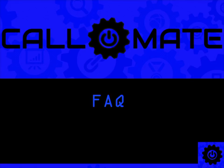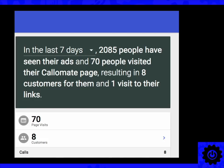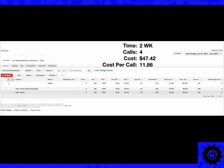Questions we always get about Columate — show me some results. We have loads of data and examples from tests across many industries. Here's an example from the back office: in seven days, one account received eight phone calls of new customers. Another account: within two weeks they got four phone calls, and those four calls cost $47 — an average cost of just under $12 a phone call. This is an actual screenshot of the Google AdWords campaign showing clicks and conversions.